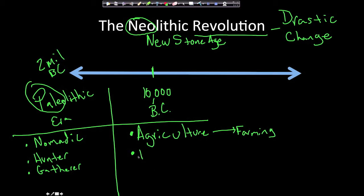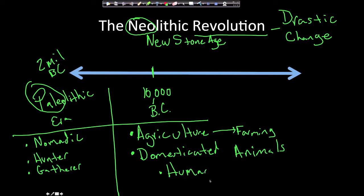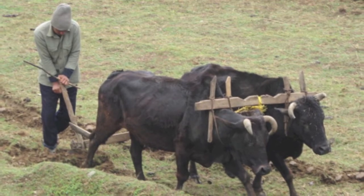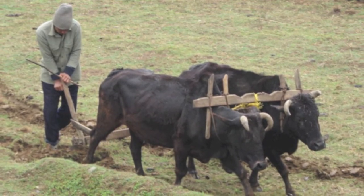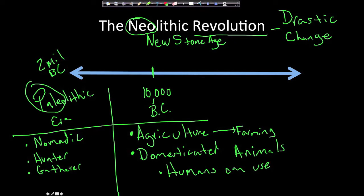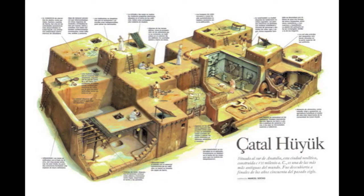They also domesticated animals, meaning humans could use them. That could mean an ox pulling a plow, or raising cows for milk and meat. Because we are moving away from a nomadic lifestyle — no longer hunter-gatherers, now practicing agriculture — that means humans began living in permanent settlements.